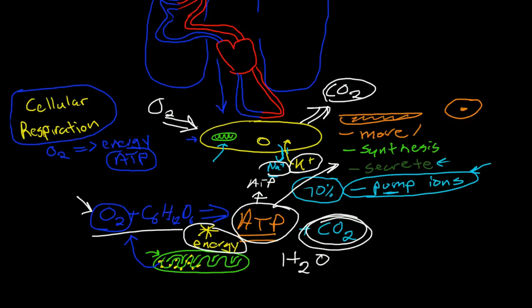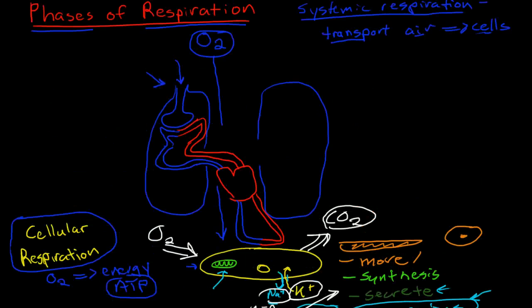So the entire respiratory system exists to bring oxygen to the cells and carbon dioxide away from the cells. So how does that happen?